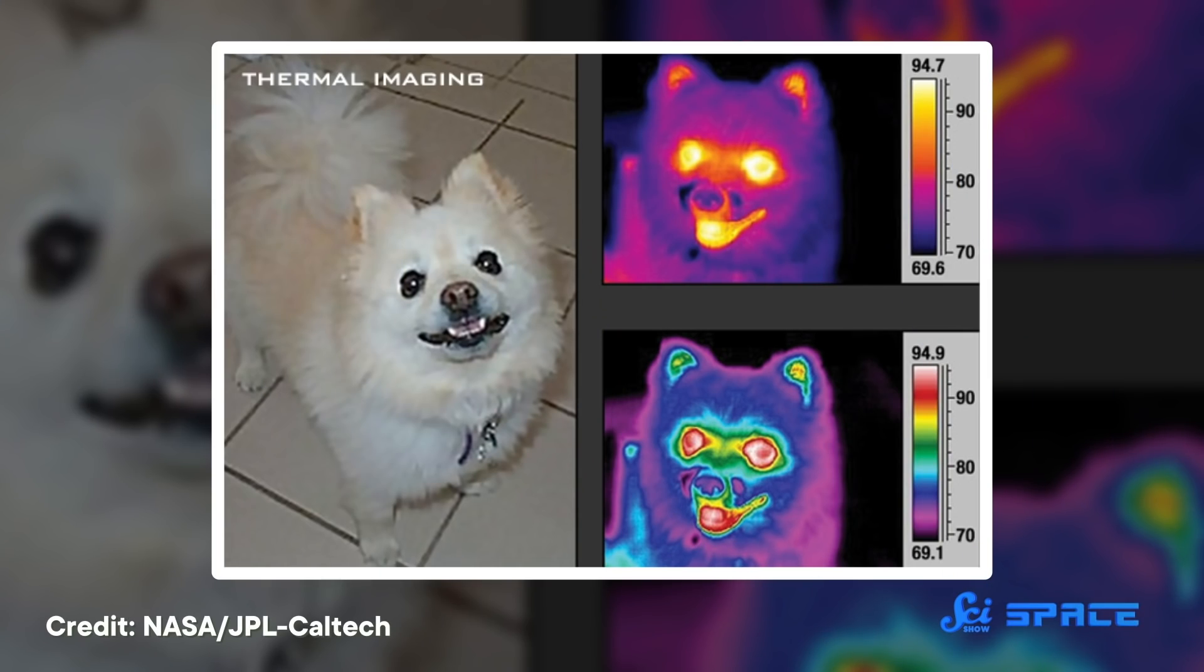Sitting here watching this video, you're emitting in the infrared. So is the phone you're holding, the couch you're sitting on, and even the Earth itself. The fact that most stuff in the universe is bright in the infrared is the first main advantage.